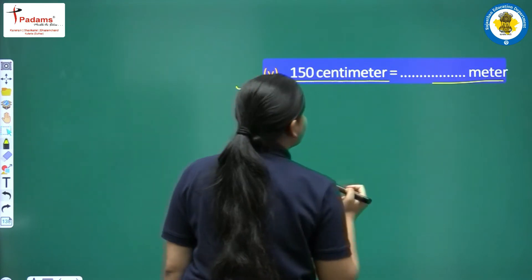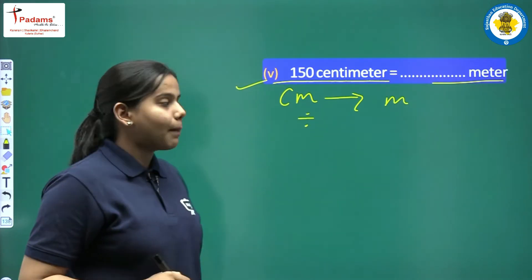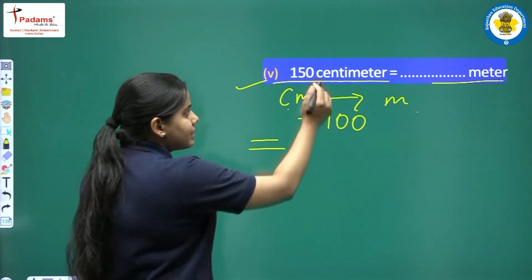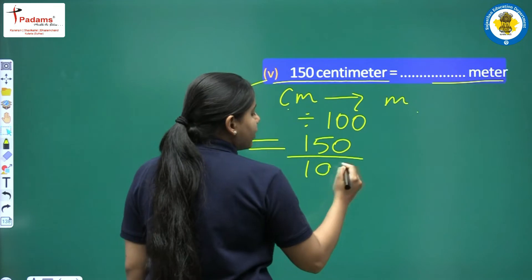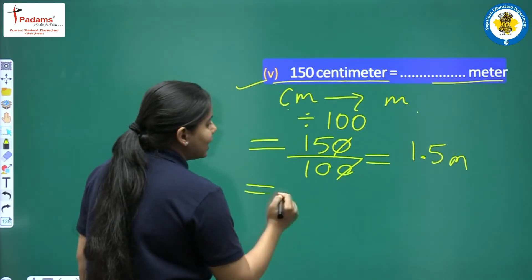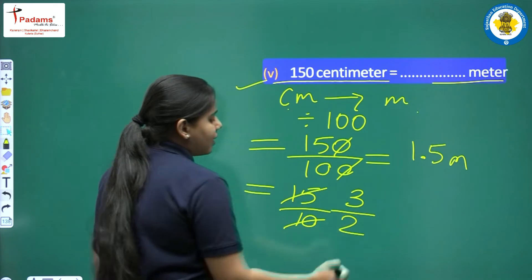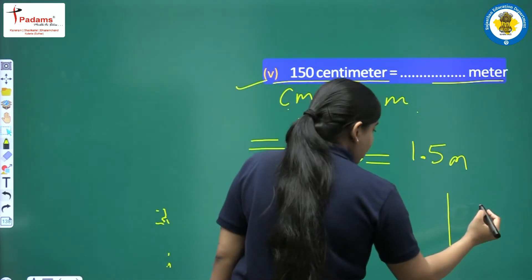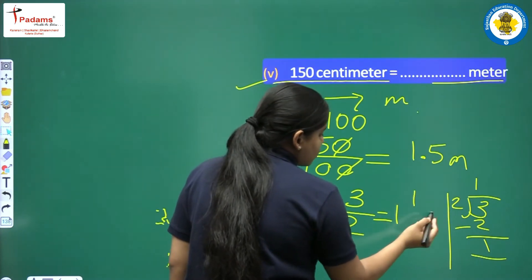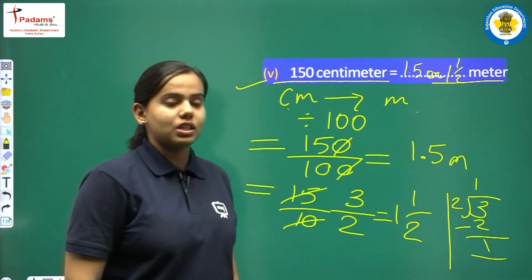Fifth: 150 centimeters equals dash meters. We have to convert centimeters into meters — smaller unit to bigger unit, so we apply division. We divide by 100 because 1 meter equals 100 centimeters. So 150 divided by 100: zero cancels zero, leaving 15 upon 10. Dividing both by 5 gives 3 upon 2. As a mixed fraction: 2 times 1 is 2, remainder 1, so the answer is 1 whole 1 upon 2 meters, or in decimals 1.5 meters. Both are the same and equal.